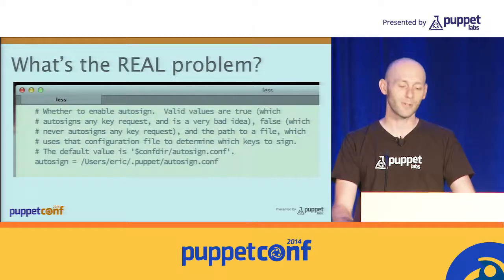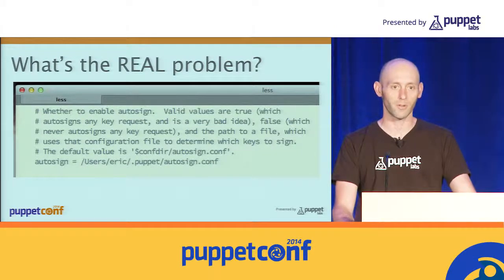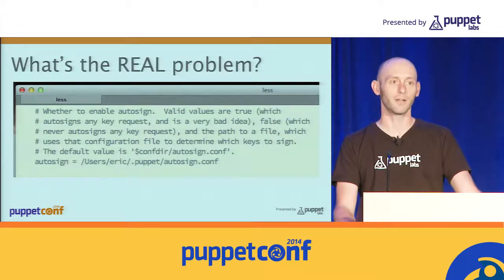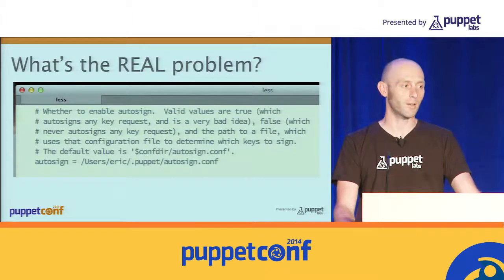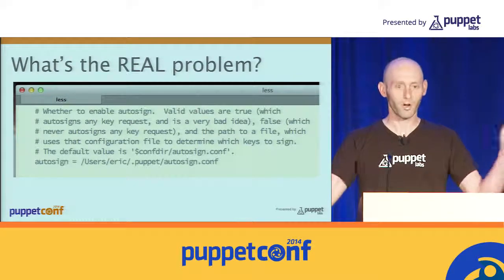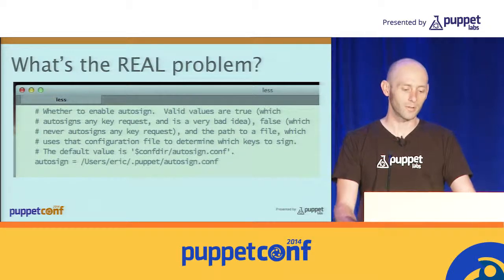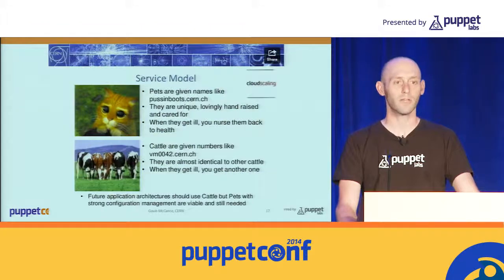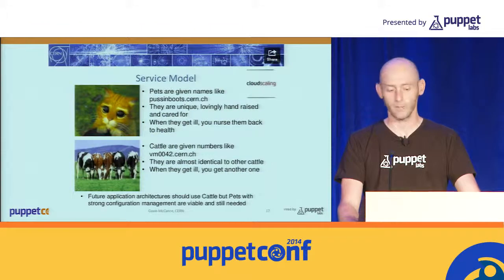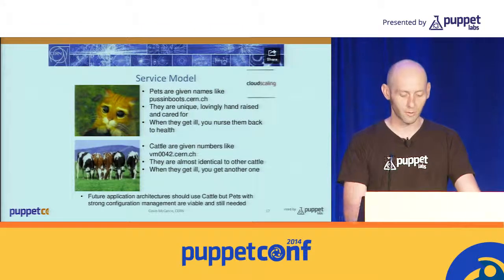We tried to issue a helpful error message about clocks being out of sync, but there are actually more things that can go wrong. Having an error message that says 'your dates are out of sync' when the user's dates are perfectly in sync is probably not the most helpful approach — we should have hedged our bets a little bit.